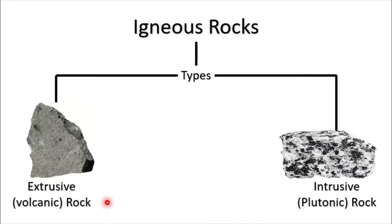The other type of igneous rock is mined — these are intrusive rocks. Another name for intrusive rock is plutonic rock. In the next slide, you will understand why one is called intrusive and why the other type of rock is called an extrusive rock.